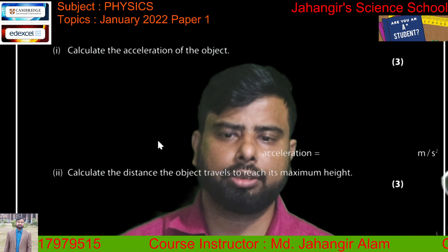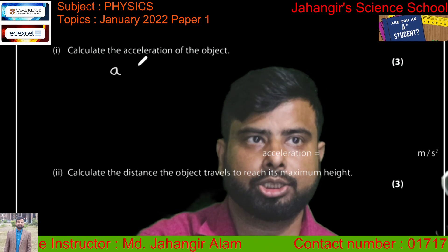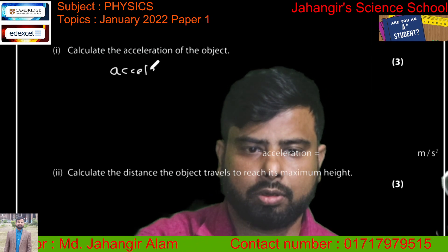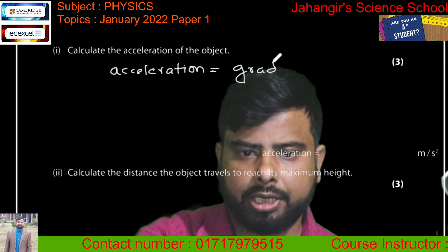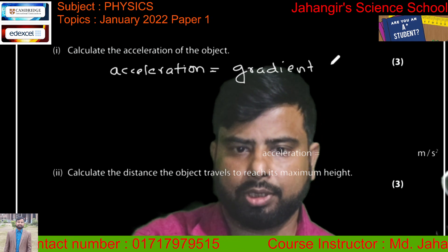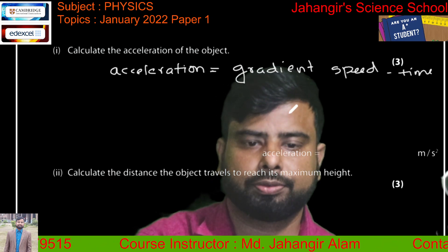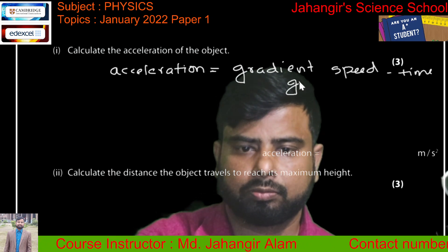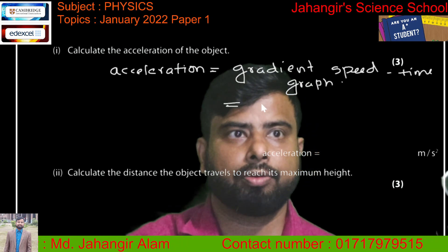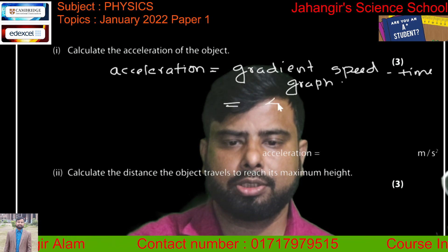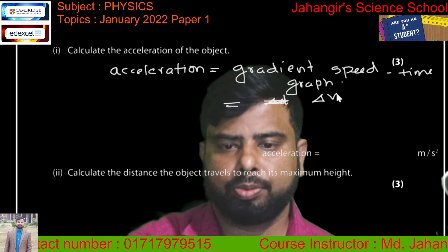We know acceleration is equal to the gradient of the velocity-time graph. So acceleration equals the gradient of the velocity-time or speed-time graph. To calculate the gradient we need change in speed divided by change in time — that means rise over run.